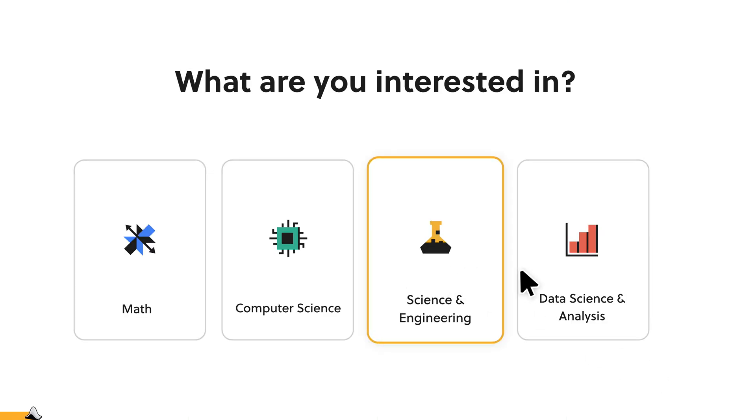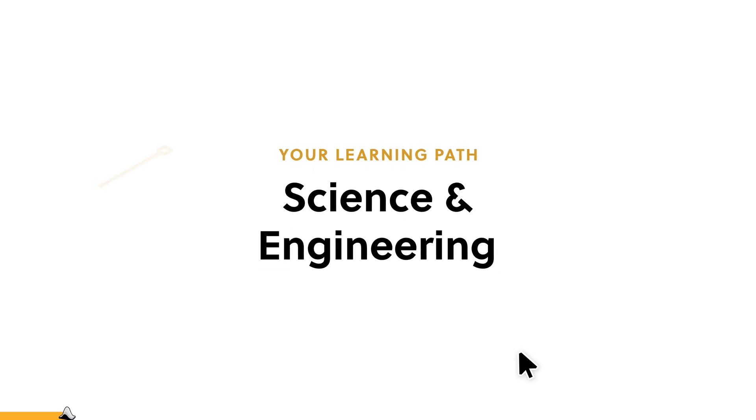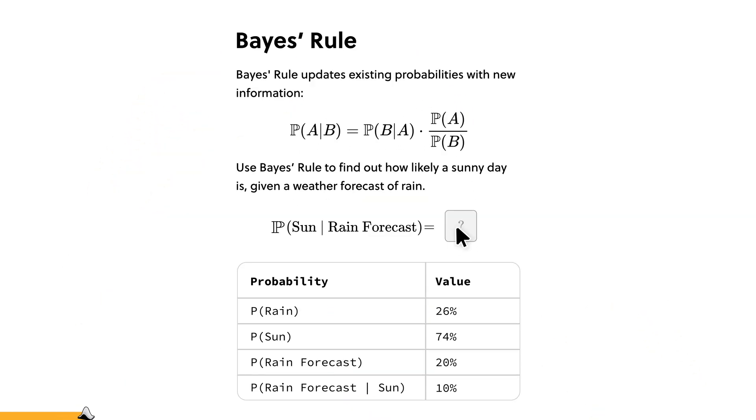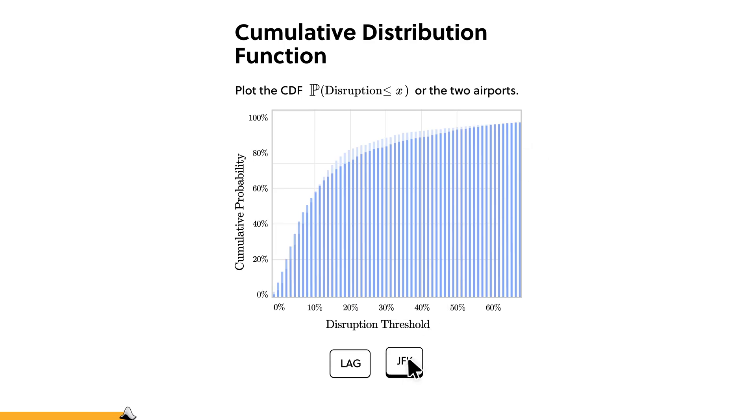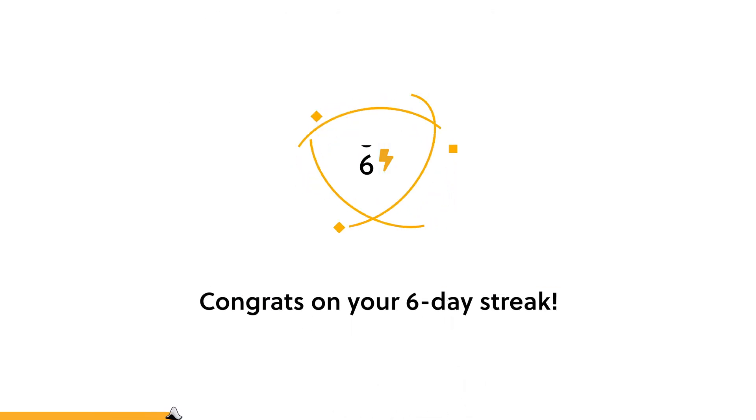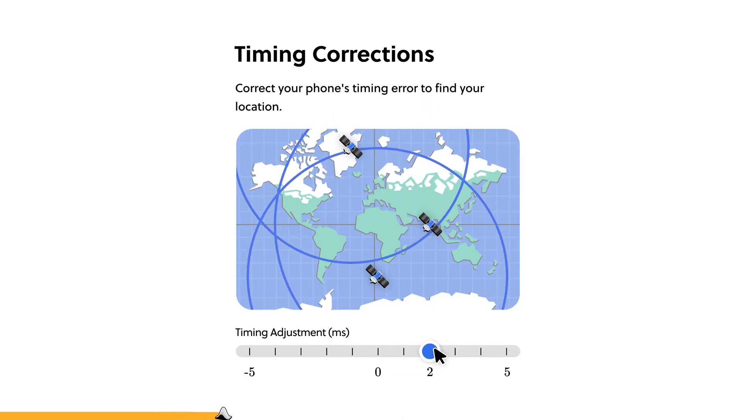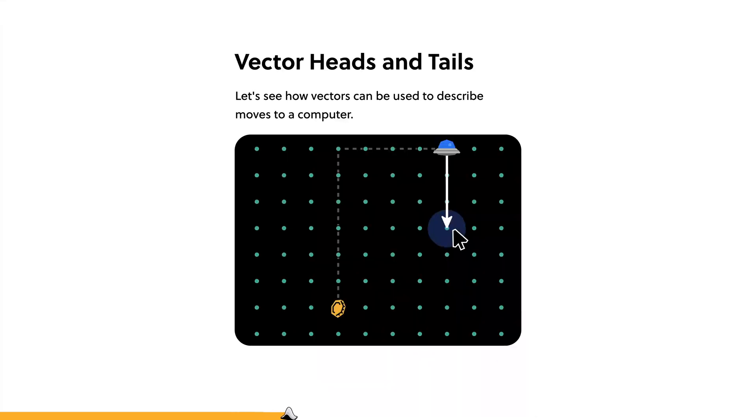Brilliant is an online platform that has over 70 interactive courses in various fields including math, computer science, and programming. One of the best parts of Brilliant is its focus on active learning. Instead of making you mindlessly read through text, Brilliant lets you take a hands-on approach with your learning with interactive exercises and quizzes. This way you build a more intuitive understanding of the material that will serve you better in the real world.